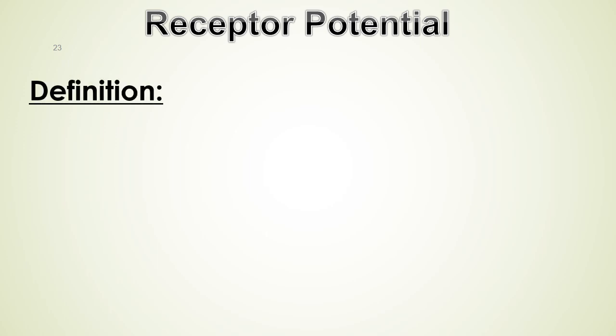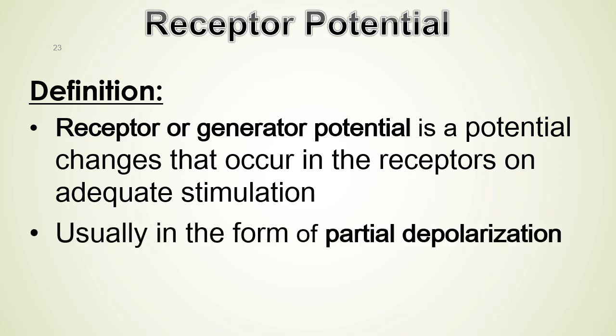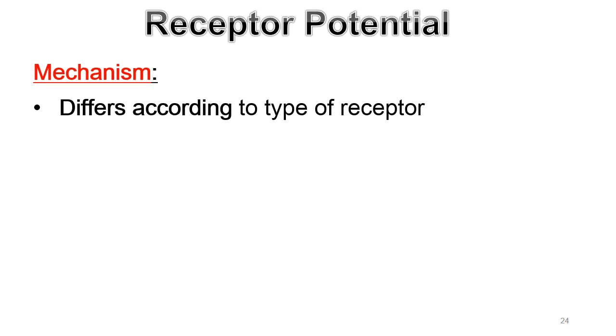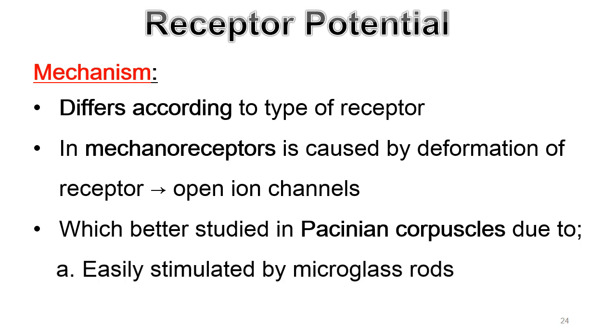The receptor potential (also called generator potential) is the potential change that occurs in receptors upon adequate stimulation. The first event in the sensory pathway is the generation of this receptor potential — it is a partial depolarization involving slow ionic changes. The mechanism varies among receptor types; in mechanoreceptors, deformation opens ion channels. This can be studied in Pacinian corpuscles, which are large, easily dissected, and can be stimulated with a microglass rod.